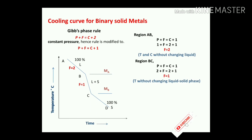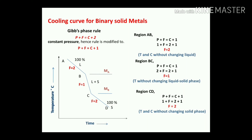For region C to D: P plus F equals C plus 1. Substituting the values gives F equals 2, meaning temperature and composition can change without altering the solid phase, since point C is the end point of solidification. From point A to point D, both metals A and B are 100% soluble in both the liquid and solid states — and this is also proven by the Gibbs phase rule.